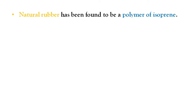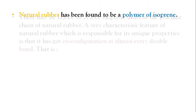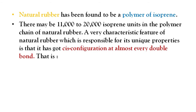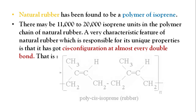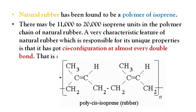Natural rubber is a polymer of isoprene, and there may be 1,100 to 20,000 isoprene units in the polymer chain. What is responsible for its unique characteristics is that it has a cis configuration — the CH3 and CH2 groups are on the same side.